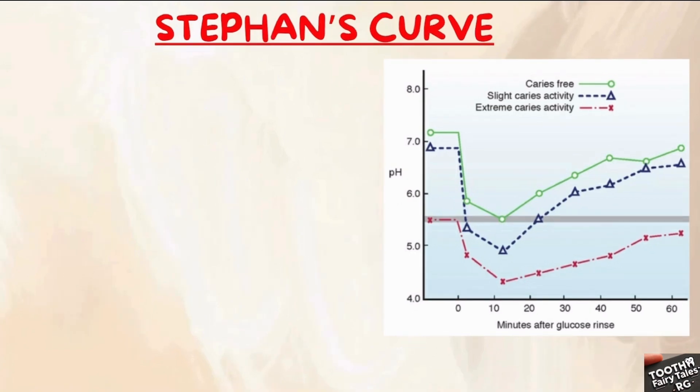Let us walk through a practical example using the glucose rinse to see how the pH changes can indicate the patient's risk for caries. Imagine a patient with a healthy oral environment where the pH is in the normal range. When the patient rinses with glucose, the pH in their mouth naturally drops because the bacteria start to ferment the sugar.